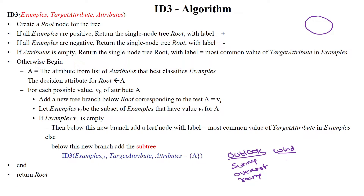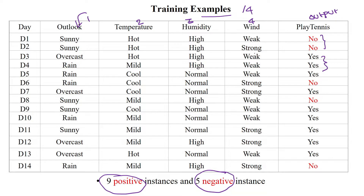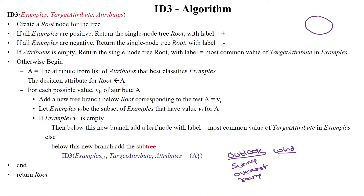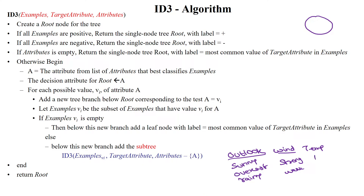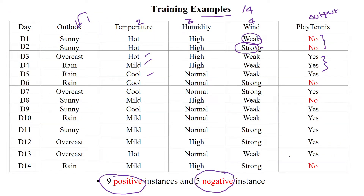Wind is having two values: strong and weak. Temperature is having three values: hot, mild, and cool. Another attribute is humidity, which also has two values: normal and high.